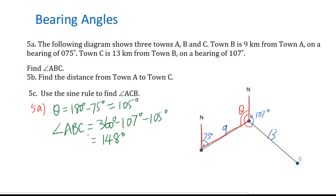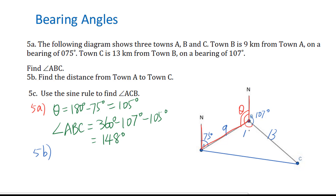Let's go to 5B: find the distance from town A to town C. First of all, we need to connect A and C, then label this angle as 148 degrees. We can say this 148 degree angle is an included angle, so for an included angle you have to use the cosine law.